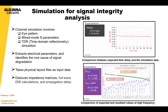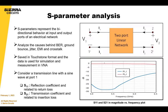For signal integrity analysis: to analyze signal integrity, perform simulation and measurement of a channel concurrently and compare the data. If they correlate, signal integrity is established. Channel simulation involves eye pattern, mixed-mode S-parameters, and TDR simulation. Simulation helps extract electrical parameters and the actual behavior of the circuit board. It identifies the root cause of signal degradation before producing a prototype. It takes layout files as input, and deduces impedance matrices, full-wave EMI calculations, and propagation delay.